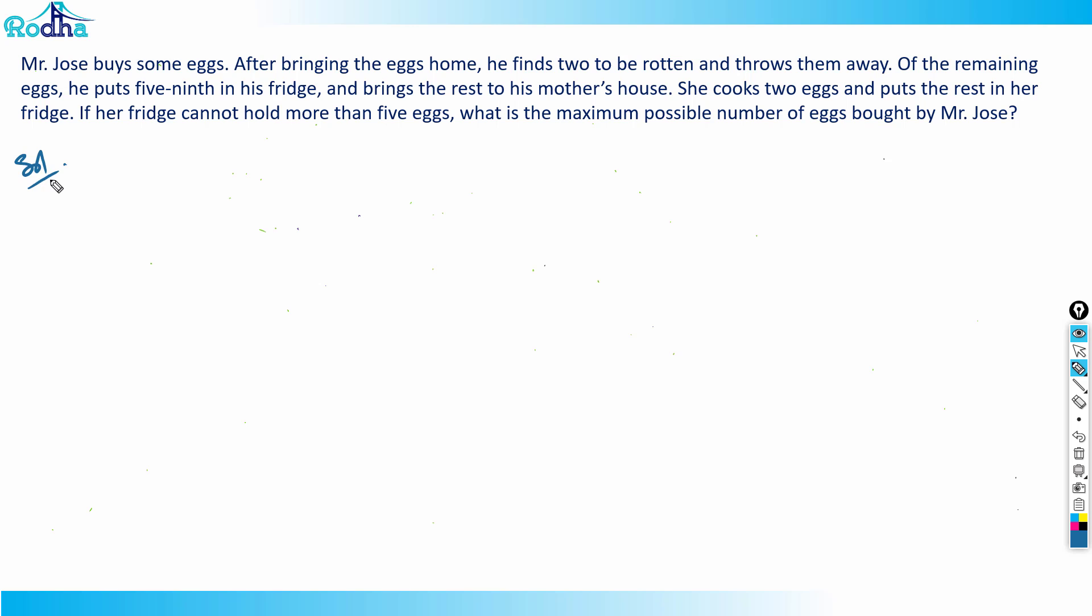Of the remaining eggs, he puts five-ninths in his fridge and brings the rest to his mother's house. She cooks two eggs and puts the rest in her fridge. If her fridge cannot hold more than five eggs, that means the capacity of the fridge is less than or equal to five.